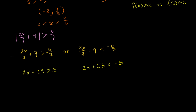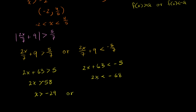Subtracting 63 from both sides of the first equation: 5 minus 63 is negative 58, so 2x is greater than negative 58. Subtracting 63 from both sides of the second: 2x is less than negative 68. Dividing both sides by 2 on the first — we don't swap the inequality because we're dividing by a positive number — x is greater than negative 29. Or, dividing the second by 2, x is less than negative 34.